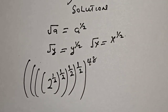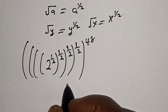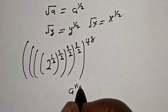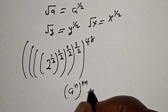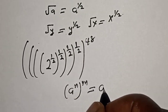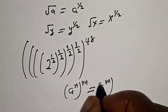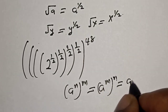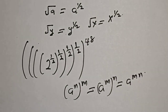Now remember this exponential rule: a raised to the power n, raised to the power m, is equal to a raised to the power m raised to the power n. This is equal to a raised to the power mn.